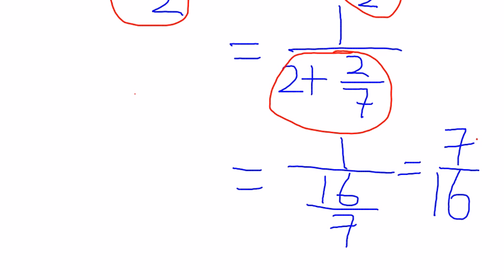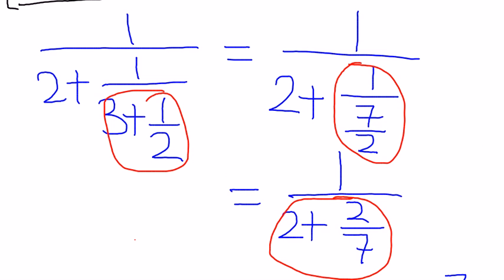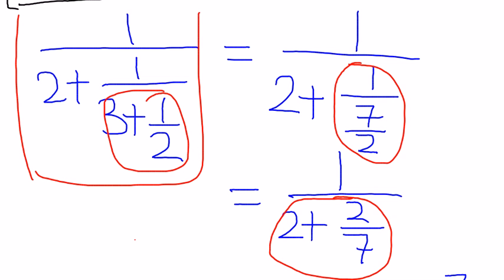So now it basically means that 7 over 16 is actually the same as the original continued fraction. Now the question for you is the following: I'm going to do the opposite direction. Which basically means that I give you any fraction — can you tell me how to write down the continued fraction appearance of any fraction?